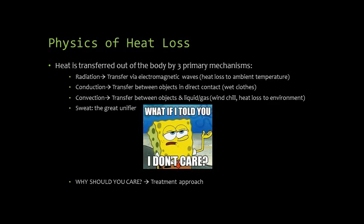It's important to have a conceptual understanding of how heat is lost in the body to help direct your therapy for your patients. Heat can be lost via radiation, which is the transfer of heat via electromagnetic waves; conduction, which is the transfer between two objects in direct contact; and convection, which is the transfer between objects and a liquid or gas. Conduction is demonstrated by heat loss to wet clothing or to cold hard ground without adequate shelter. Convection can be demonstrated by wind chill, and radiation is general heat loss to ambient temperature, which is consistently happening.